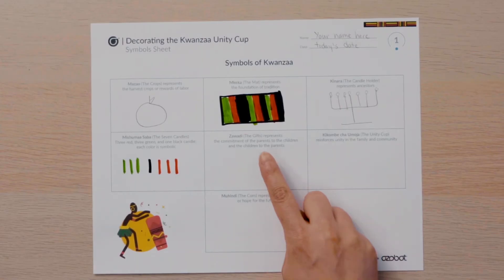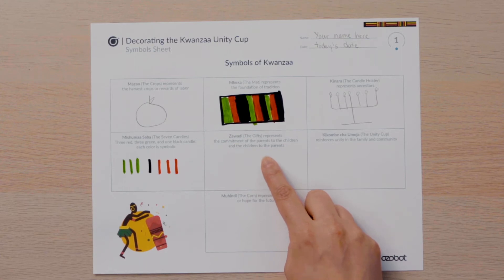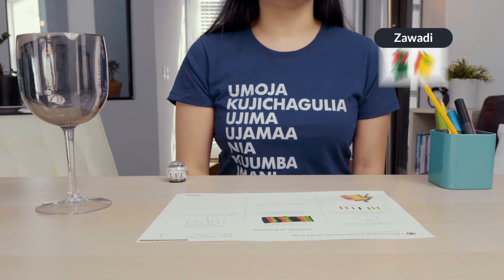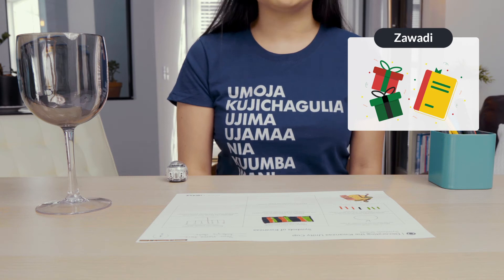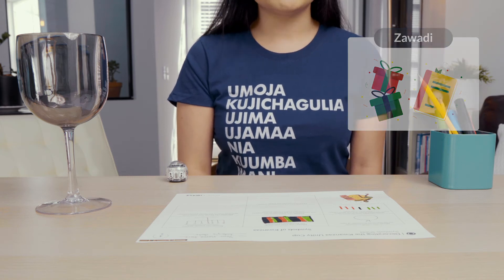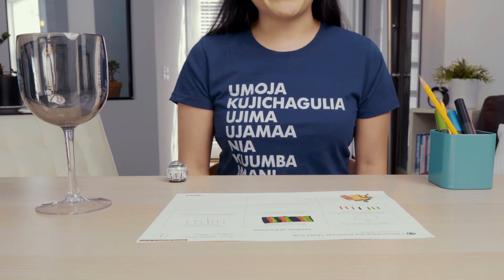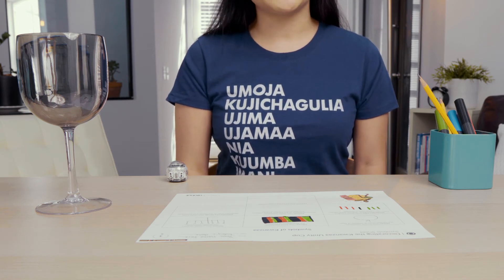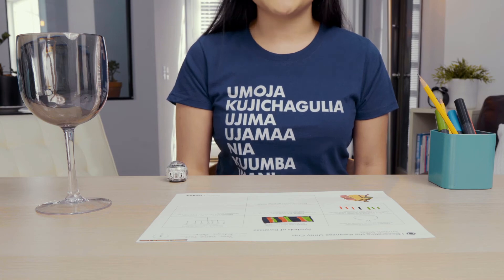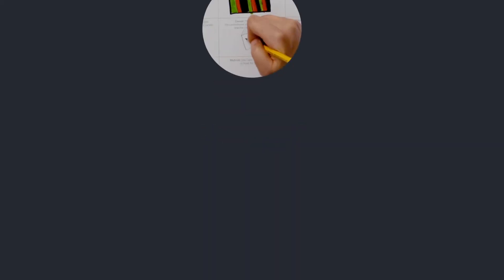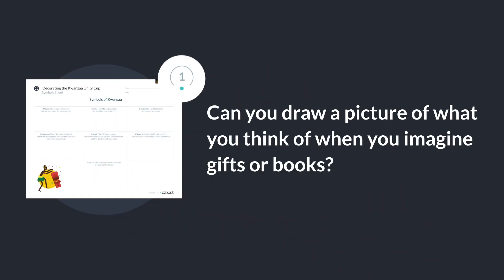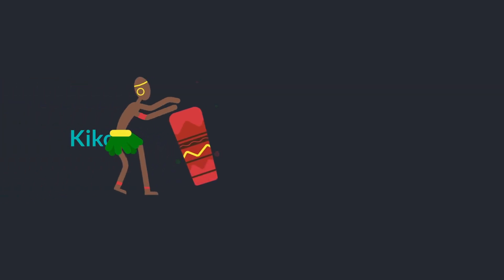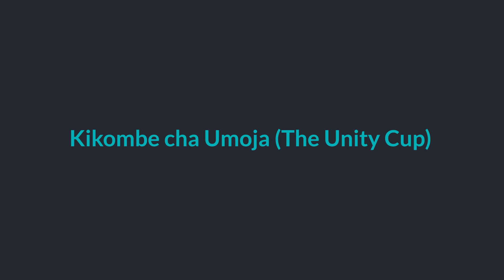Find the box that says Zawadi, or the gifts. The gifts, which are usually given on the last evening of Kwanzaa, represent the commitment of the parents to the children and the children to the parents. Often a book is given to represent the importance of education and remembering heritage. Can you draw a picture of what you think of when you imagine gifts or books?